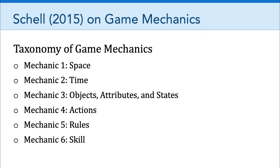That brings us to game mechanic number six, which is skill. Every game requires players to exercise certain skills, and if a player's skill level is a good match to the game's difficulty, then the player will feel challenged and stay in a state of flow. Most games require a blend of skills, which can be divided into physical, mental, and social skills. In our postmodern Lemonade Stands, there wasn't much physical or social skill required since it wasn't multiplayer — it was really a mental skill, processing information about weather, ingredients, and how to combine them for maximum sales. But other games, of course, test our physical and social skills more.